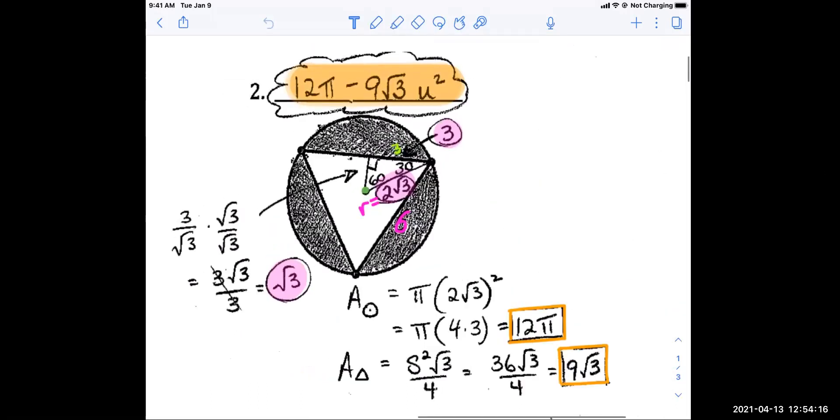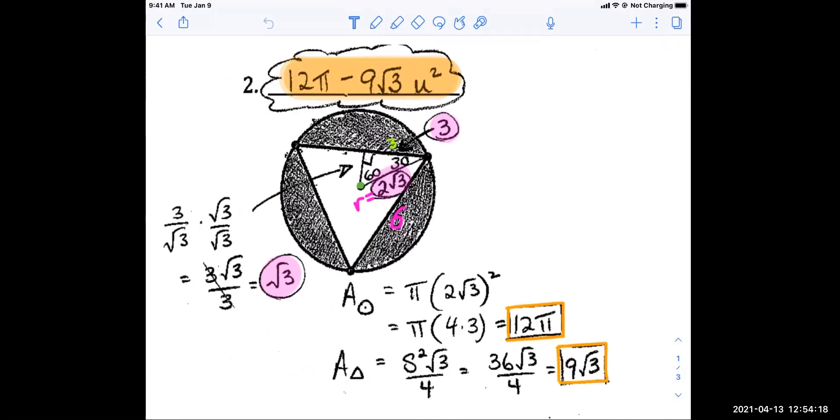So I think we talked about how you could do two different things on this one. One option is to draw on a little apothem triangle to figure out the radius of the circle. You have the side of the regular triangle, so you can do s squared root three over four, but to do the area of the circle, you have to know the radius. So if you draw on a little apothem triangle, then you can use the 30, 60, 90 to find the radius.